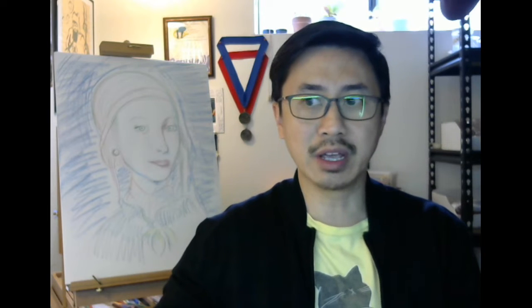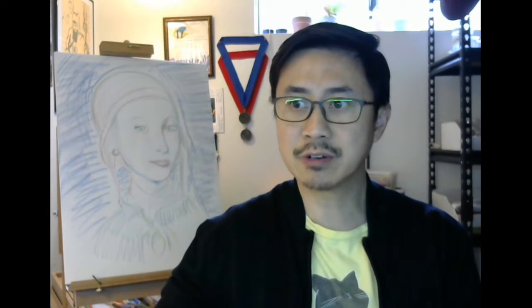But the biggest news is basically the district finally kind of came to decision about how to deal with the grades and they put out a grading policy. So I wanted to take some time to go over that and then let's talk about what I expect for the next couple of days. So basically the grading policy has two big parts. Number one, your grade, the grade that you have in your grade book right now, is the lowest it can be.